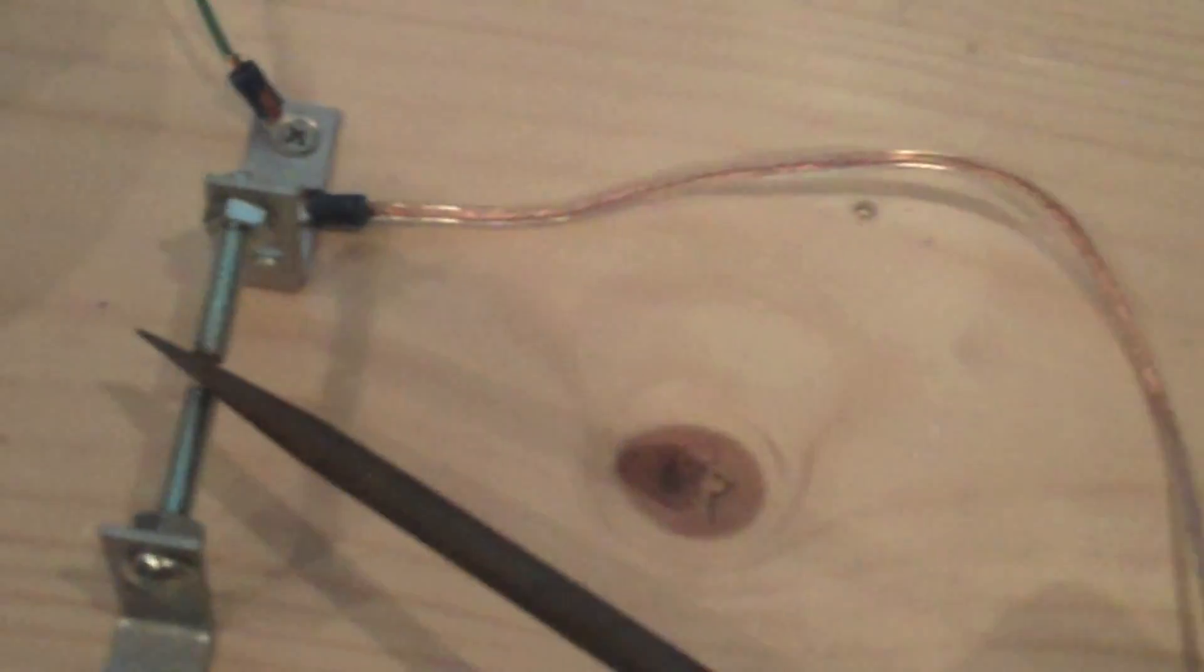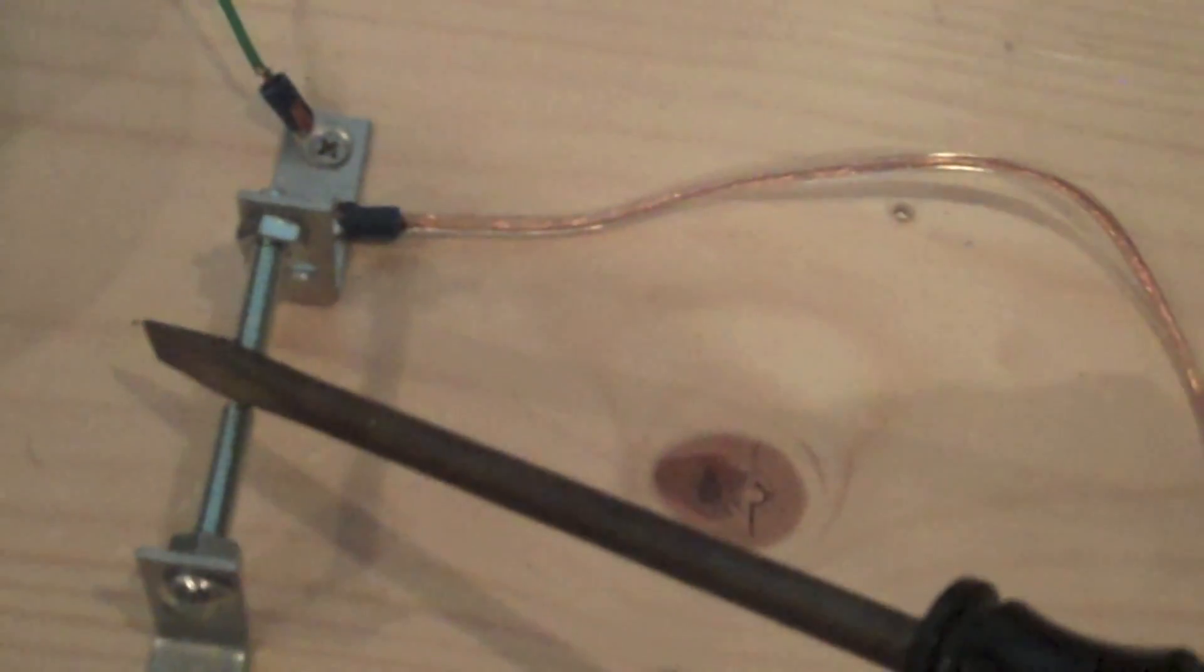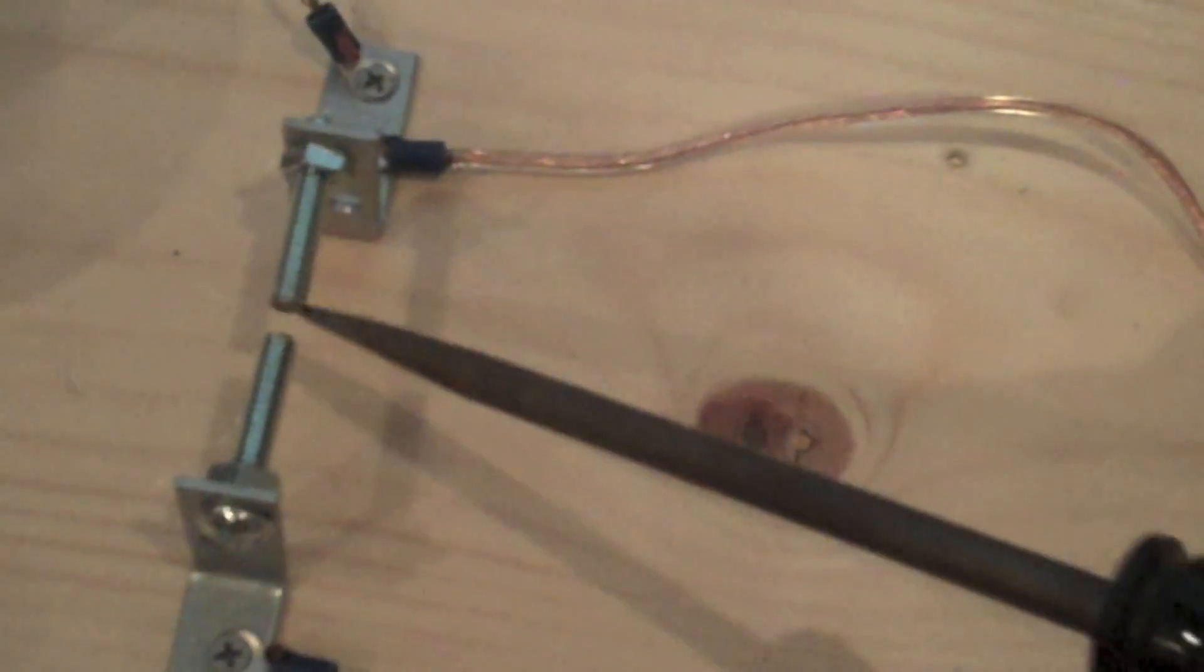But if you were here you'd probably be putting your hands on your ears. Now I'm going to discharge the capacitors, or short them, by putting a metal object that is insulated for me between the spark gap electrodes. Do this because they may store a charge, and if you discharge it or short it out, you'll be safe.